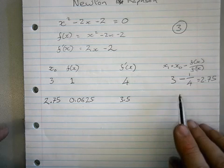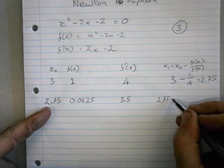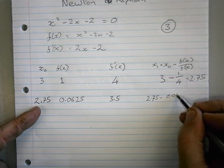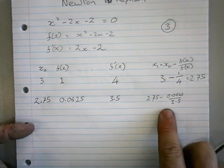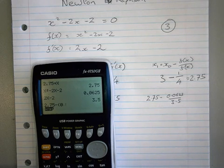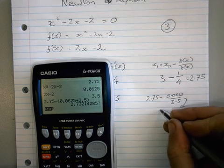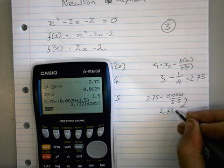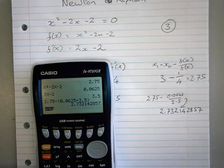So I'm now going to write x0 which was 2.75 take away 0.0625 over 3.5. I'm going to do that calculation, so 2.75 minus brackets 0.0625 divided by 3.5 close the brackets press equals and I'm just going to put that down here so I can see what I'm doing and I've got 2.732142857.